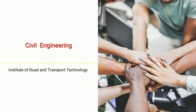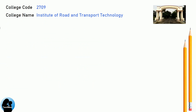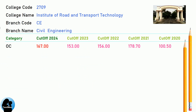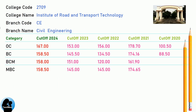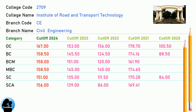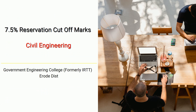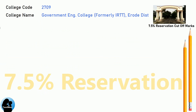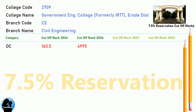DNEA 9.5 Reservation Cut-Off for Institute of Road and Transport Technology in Civil Engineering. DNEA 7.5 Reservation Cut-Off for Government Engineering College, formerly IRTT, Erode District in Civil Engineering.